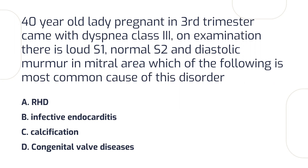During diastole, if blood is flowing from the atrium to the ventricle and it produces a sound, that means there is a problem when the valve opens. If there is a problem when the valve opens, that means there is stenosis. Stenosis occurs when the valve is narrowed. If you have a murmur in the mitral area, it is a diastolic murmur — this is mitral stenosis.